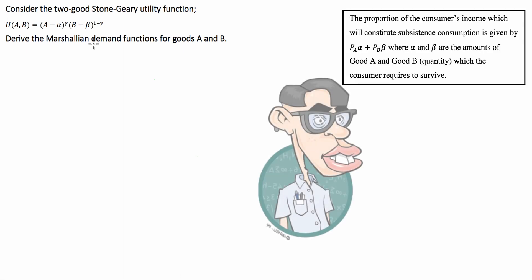For example, these will be items such as food, water, and shelter. If oxygen was for sale, this would be part of subsistence consumption. So basically what we're going to be doing as a consumer is we'll be setting aside a portion of our income for the consumption of these goods before we then allocate the rest of our income to the purchase of other goods.